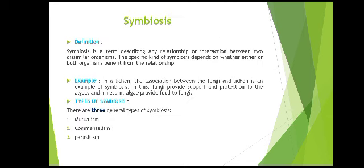Symbiosis is a term describing a relationship or interaction between two dissimilar organisms. The specific kind of symbiosis depends on whether either or both organisms benefit from the relationship. In a lichen, the association between fungi and algae is an example of symbiosis — fungi provide support and protection to the algae, and in return, algae provide food to the fungi. Types of symbiosis include mutualism, commensalism, and parasitism.